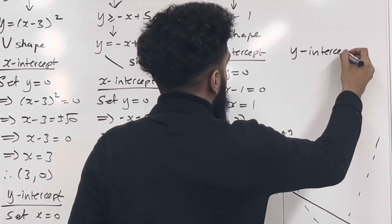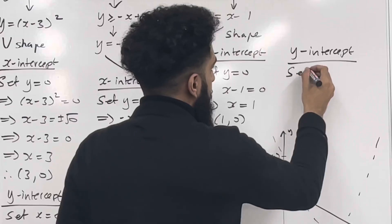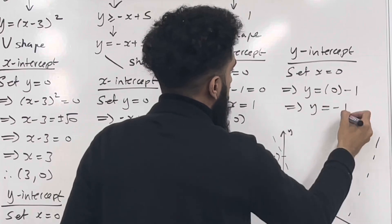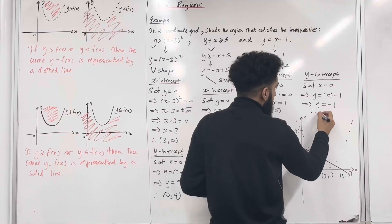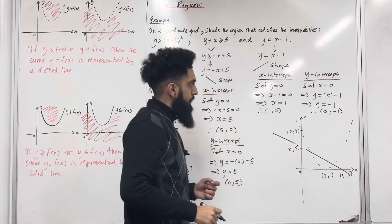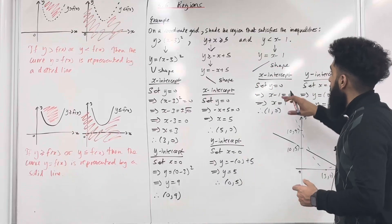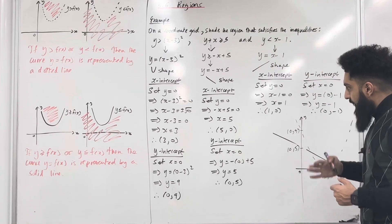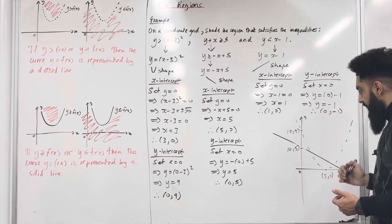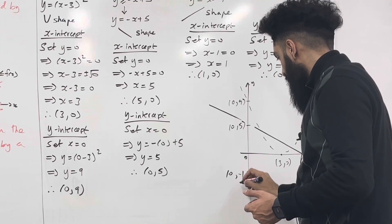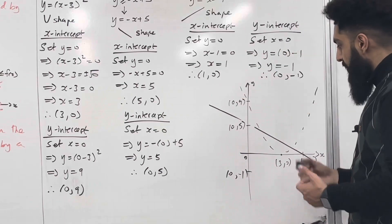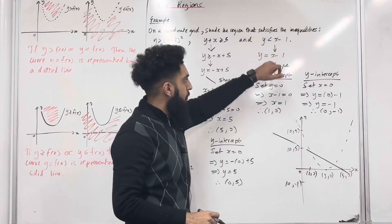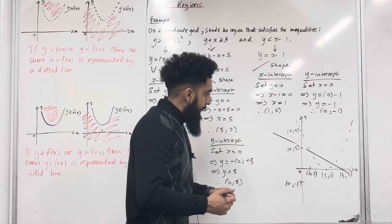Let's work out the y-intercept. To find the y-intercept, I need to set x equal to 0. This implies that y is equal to 0 minus 1, which implies that y is equal to minus 1. So the y-intercept will be 0, minus 1. Now, for the third inequality we have a less than, so the graph y equal x minus 1 will be represented by a dotted line because equal is not included. We label the y-intercept 0, minus 1 and the x-intercept 1, 0, and represent the graph using a dotted line.